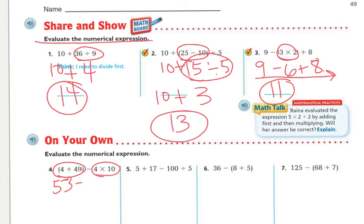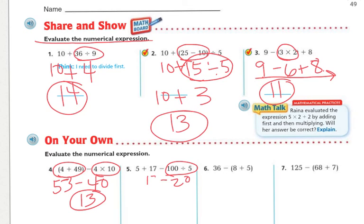We have fifty-three minus four times ten. Do multiplication first: four times ten is forty. So fifty-three minus forty equals thirteen. Next: five plus seventeen minus a hundred divided by five. No parentheses, but there is division. A hundred divided by five is twenty. Bring down five plus seventeen. Going left to right: five plus seventeen is twenty-two, minus twenty equals two.